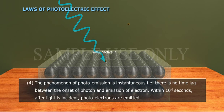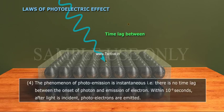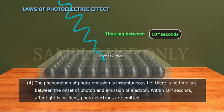4. The phenomenon of photoemission is instantaneous. That is, there is no time lag between the onset of photon and emission of electron. Within 10 power minus 9 seconds after light is incident, photoelectrons are emitted.